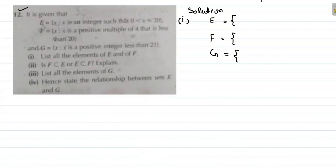Question 12: E = {x | x is an integer, 0 < x ≤ 20}. F = {x | x is a positive multiple of 4 less than 20}. G = {x | x is a positive integer less than 21}. First, let's list the elements of E.